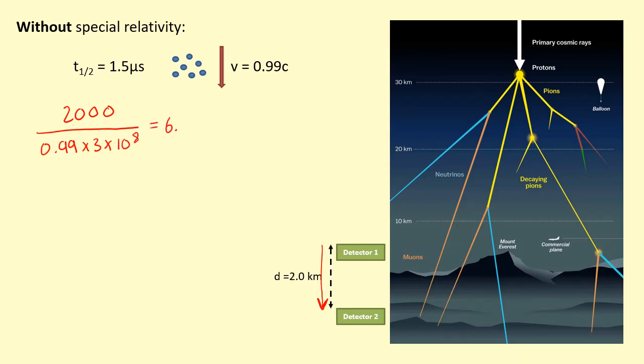6.73 microseconds. So how many half lives are in 6.73 microseconds? If we do 6.73 divided by the half life which we measured in the lab...